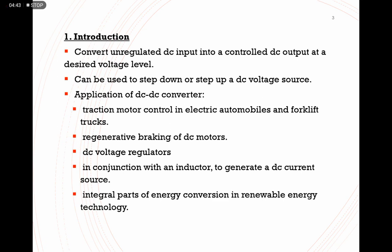Where is the DC to DC converter normally applied? It is used widely in various applications. For example: in traction motor control for electric automobiles and trucks; in regenerative braking of DC motors; in DC voltage regulators, also known as DC power supplies like the ones we have in the lab. When connected with an inductor, it can generate a DC current source. Lastly, DC to DC converters are considered part of energy conversion in renewable energy technology.